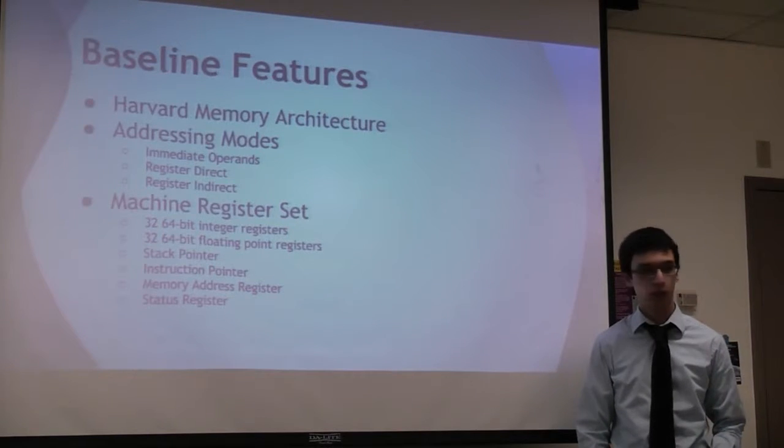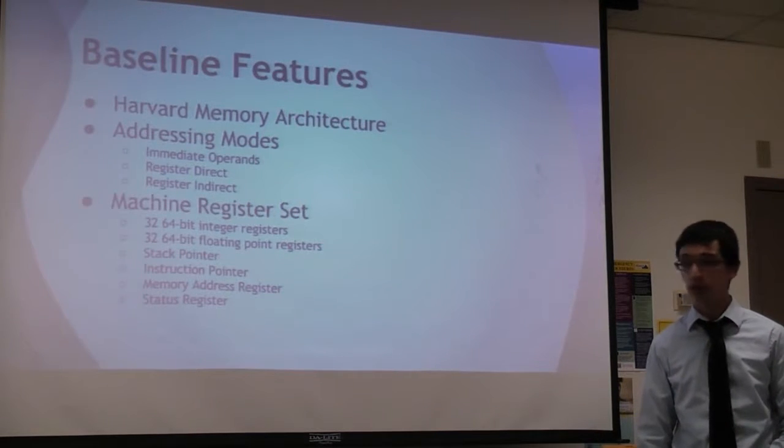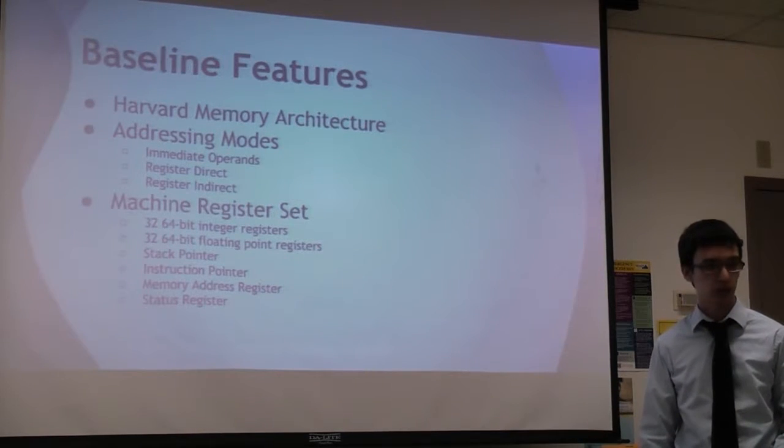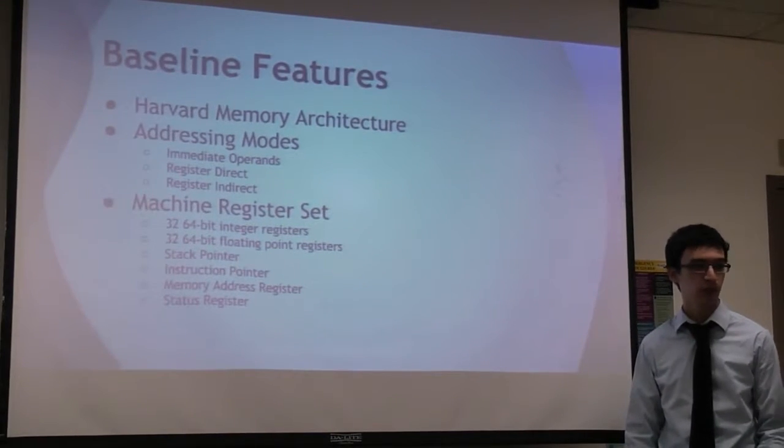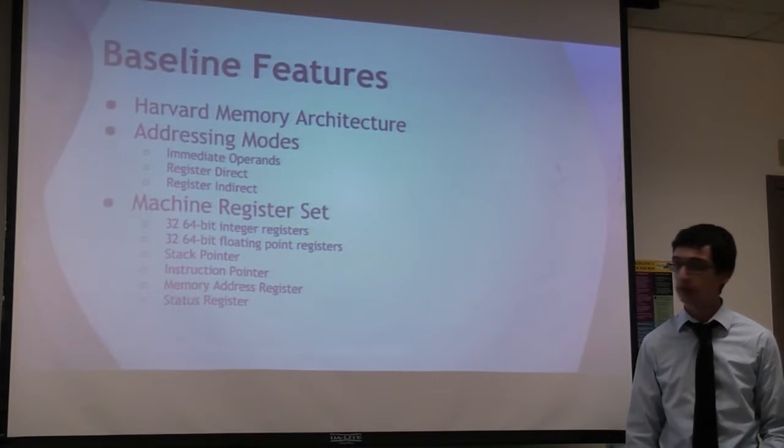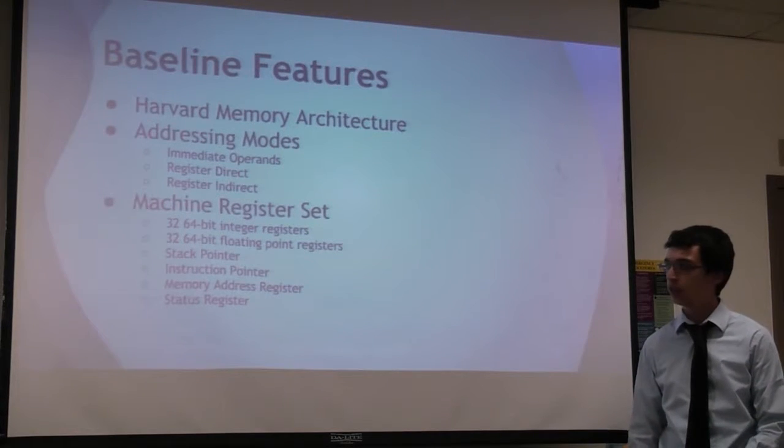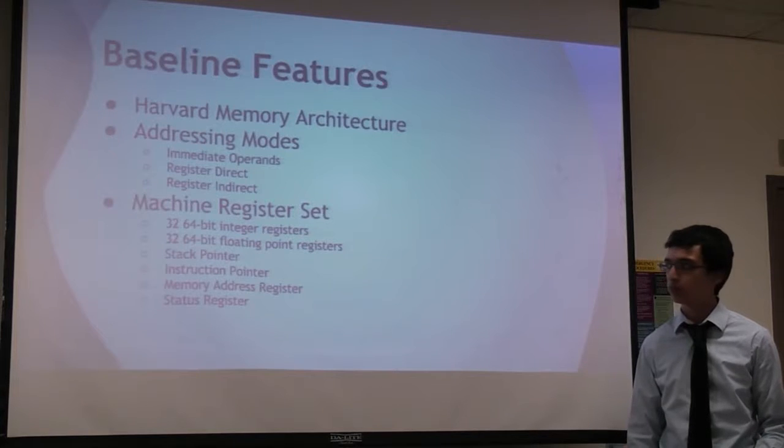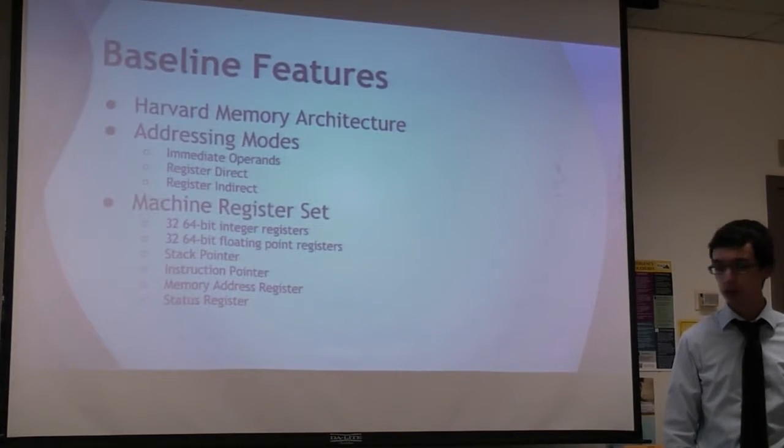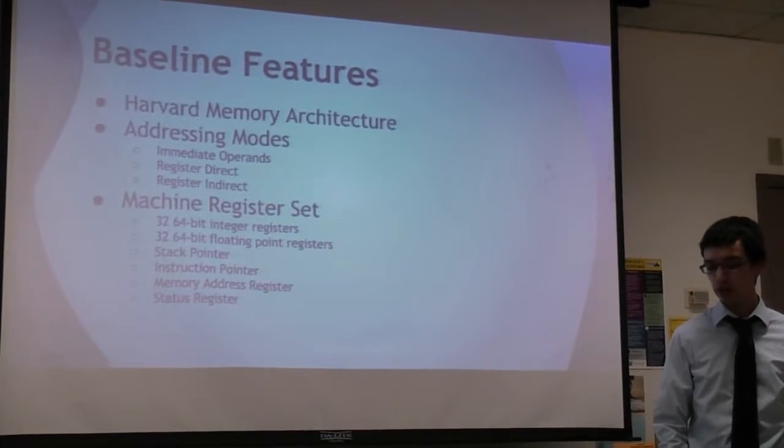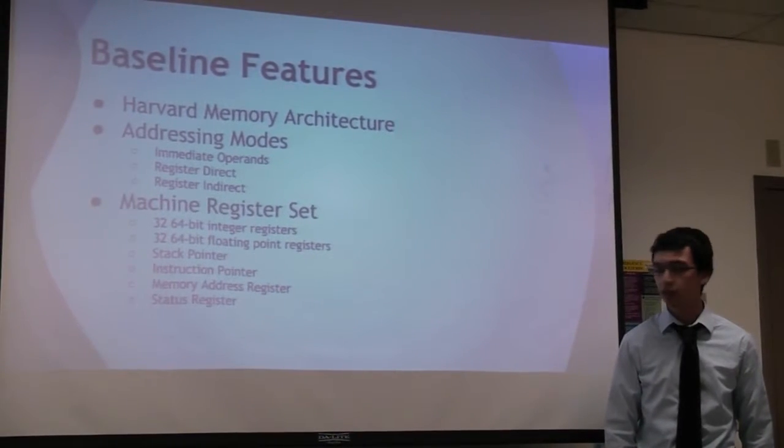And then our machine register set, the registers that we have available to us to use, we have 32 64-bit integer registers which we use in our integer data path to perform integer instructions. We're allowed to store them, modify them, read them. We also have 32 64-bit floating point registers which we have the same capabilities for but floating point instead of integer. A stack pointer to store our stack address, instruction pointer to store our instruction address, a memory address register so we can send an address to the data memory module, and our status register.